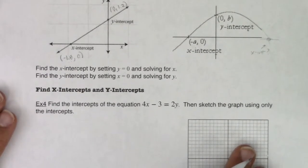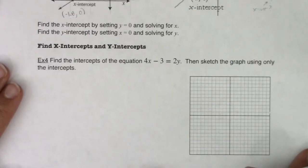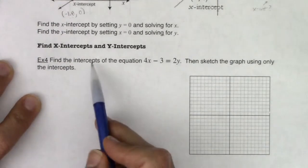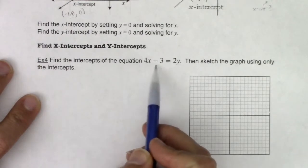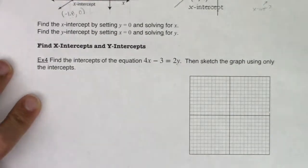We're going to practice that right now. We're going to take a look at example four. It says find the intercepts, plural, of the equation 4x minus 3 equals 2y, then sketch the graph using only the intercepts. So let's go through this and find the intercepts.